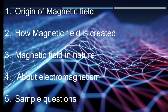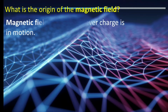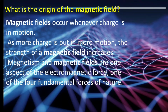What is the origin of the magnetic field? Magnetic field occurs whenever charge is in motion. As more charge is put in more motion, the strength of the magnetic field increases. Magnetism and magnetic fields are one aspect of the electromagnetic force, one of the four fundamental forces of nature — just like gravitational force, weak forces, and strong forces.